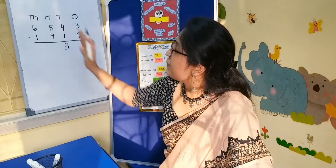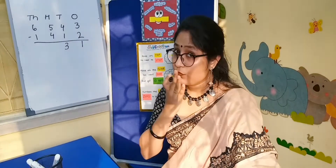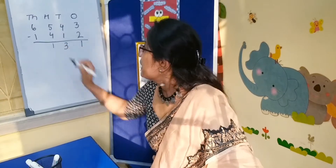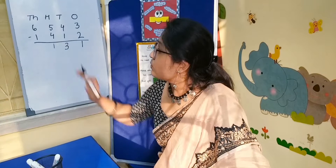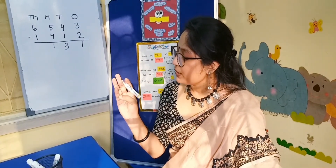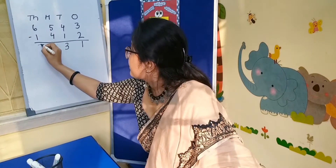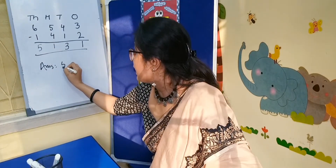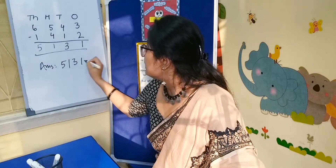Now come to the hundreds column. From 4 we have to count to 5: 4, 5 — that is 1. Now come to the thousands column. From 1 we have to count to 6: 1, 2, 3, 4, 5, 6. So the answer is 5,131.